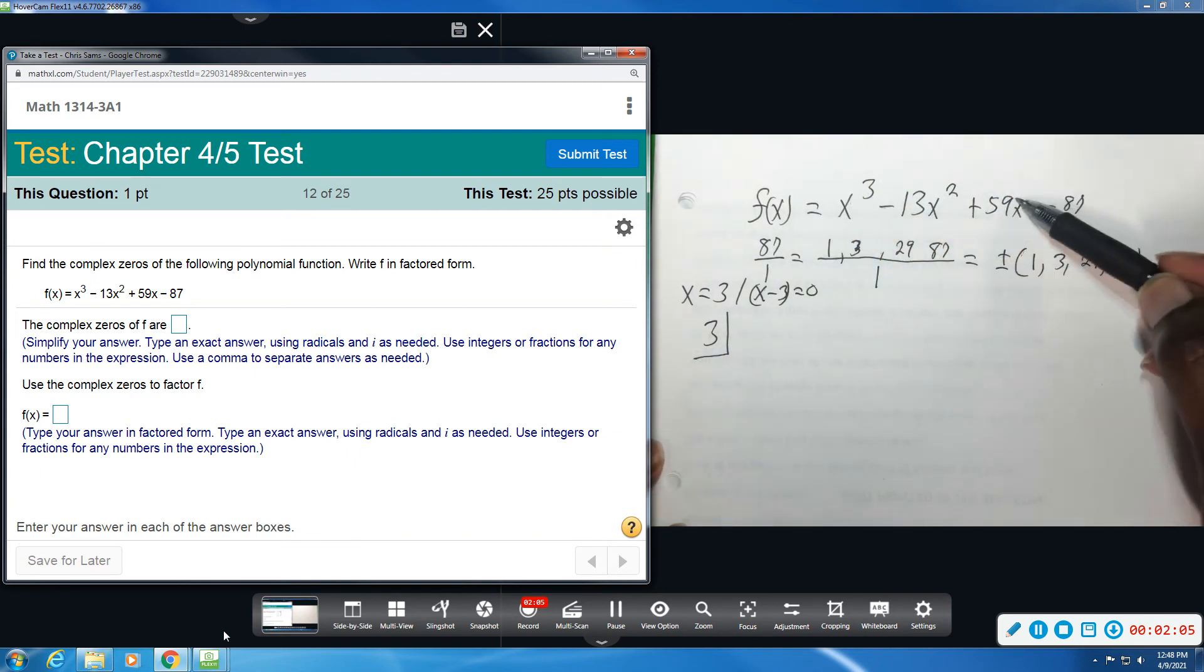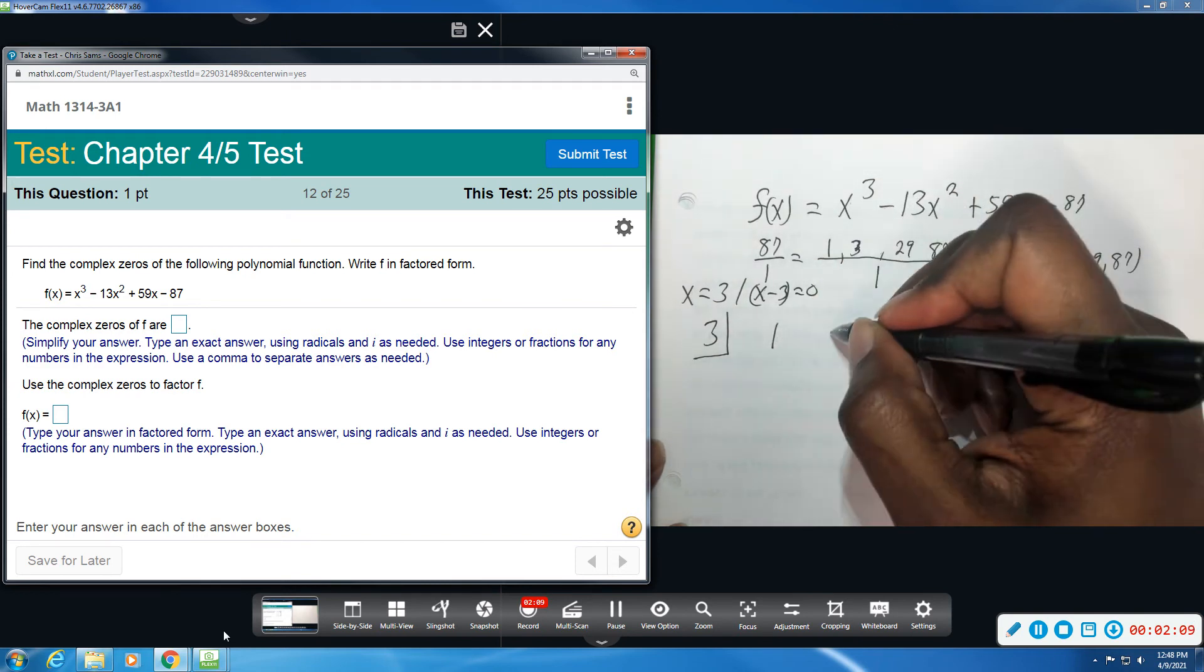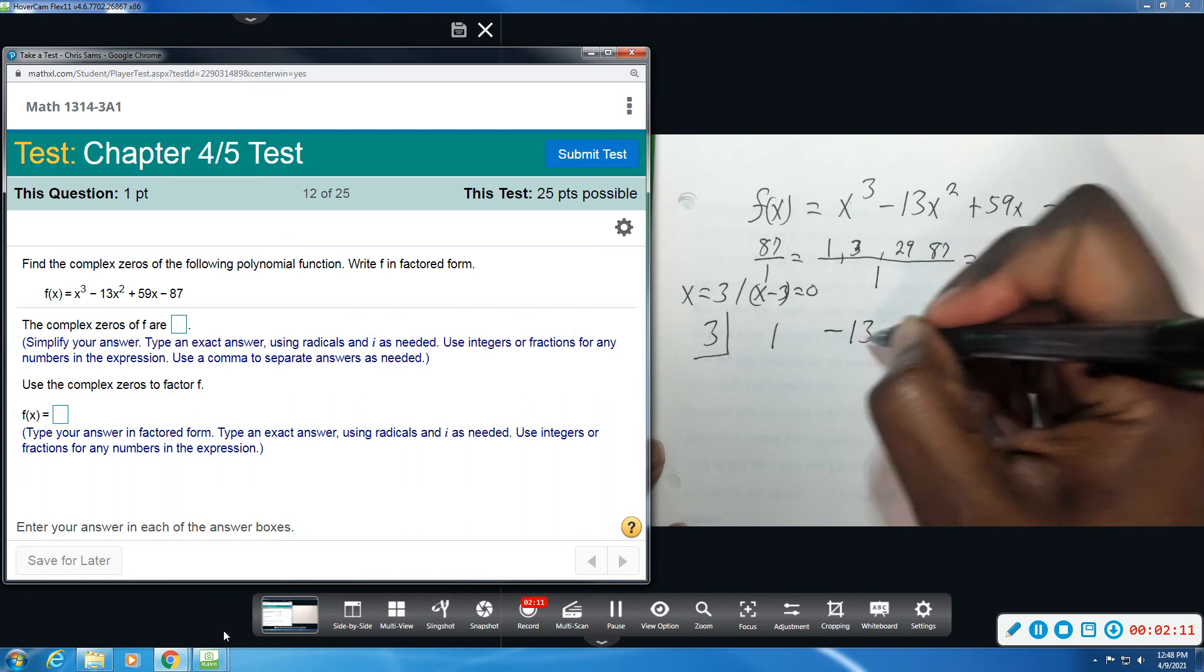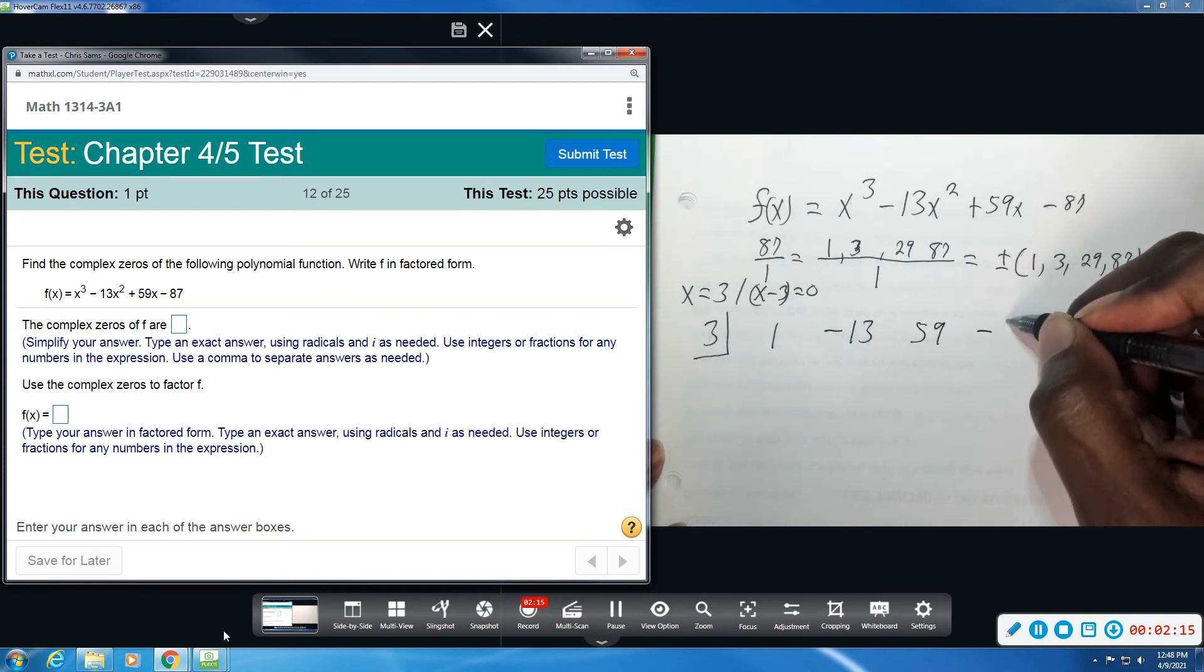We have x to the third, second, first, 0. List your coefficients. We would be 1, -13, positive 59, and then -87.